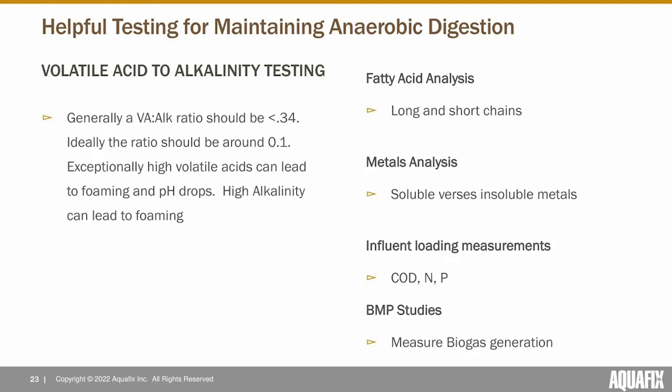Another sensitive test to predict a digester upset is the volatile acid to alkalinity ratio. You don't want a ratio greater than 0.34 — it should be around 0.1. Exceptionally high volatile acid levels can lead to foaming and pH drops. High alkalinity can also lead to foaming. Both volatile acids and alkalinity present in digesters can act as surfactants, reducing the surface tension of the digester liquid, allowing bubbles to form more easily. You need to produce volatile acids and have sufficient alkalinity to address them, but if the levels of both get too high, foaming can occur even if your digester is otherwise functioning well.